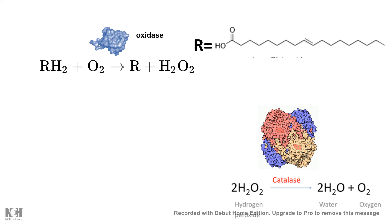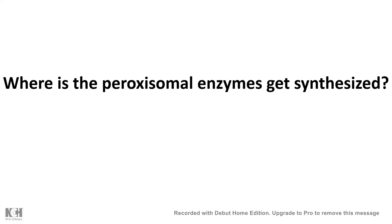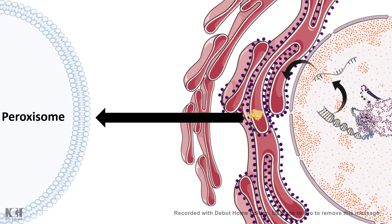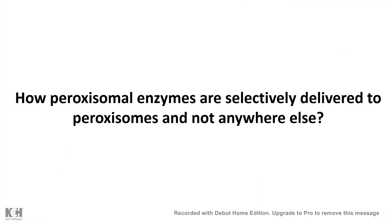Catalase, oxidase, and many other peroxisomal proteins need to be delivered to the peroxisome. Peroxisomes don't have their own protein production machinery like mitochondria do, so all the genes coding for peroxisomal enzymes are nuclear genes. Peroxisomal enzymes are transcribed in the nucleus, translated, and from there delivered to the peroxisome.